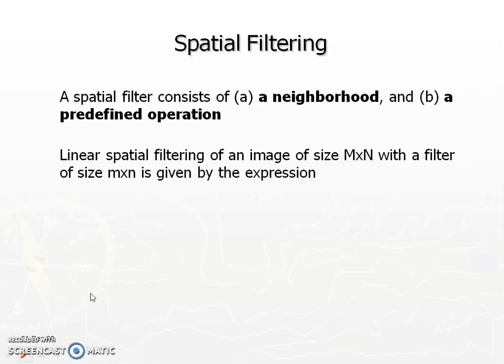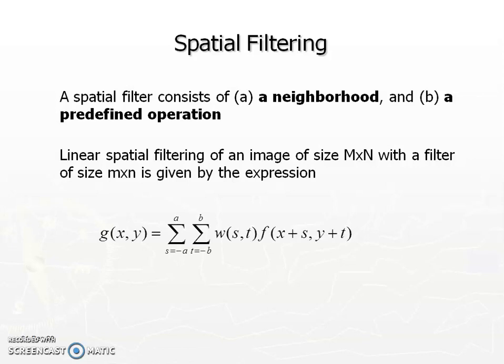A spatial filter consists of a neighborhood and a predefined operation. This predefined operation is in general represented with a mask. Linear spatial filtering of an image of size M by N with a filter of size m by n is given by: g(x,y) = summation over s from -a to a and t from -b to b of w(s,t) multiplied with f(x+s, y+t).